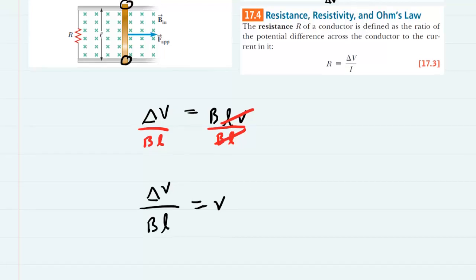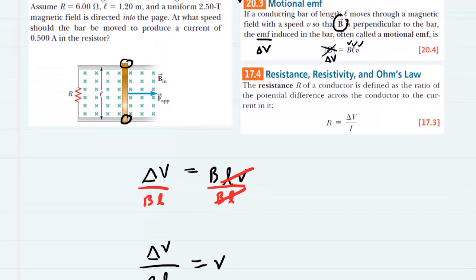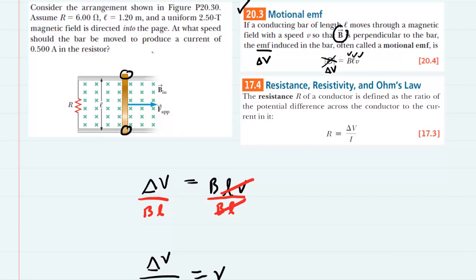Now the question does not give us the direct value of delta V. And so we actually have to step back to chapter 17, section 4, where we learned that there was a relationship between delta V, resistance, and current. It's known as Ohm's Law.